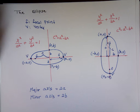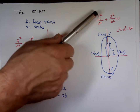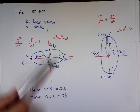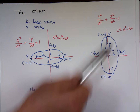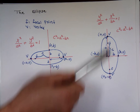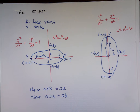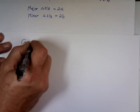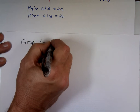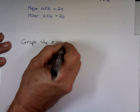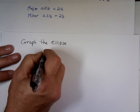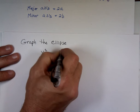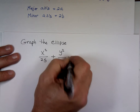The difference here is that instead of X sitting on top of A, Y is sitting on top of A. A is the longer side, B is the shorter side. So as an example: graph the ellipse X squared over 25 plus Y squared over 9 equals 1.